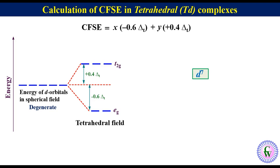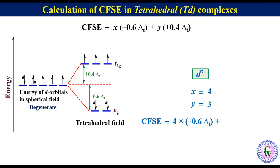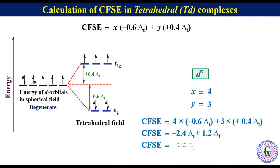If there are 7 D-electrons in the metal ion, in a spherical field environment all 7 electrons will be here. In tetrahedral ligand environment, two electrons enter the eg orbitals and 3 in t2g. The remaining two electrons will again enter eg. So in D7 tetrahedral complex, x is equal to 4 and y is equal to 3. CFSE will become 4 into minus 0.6 delta-t plus 3 into plus 0.4 delta-t, giving minus 2.4 delta-t plus 1.2 delta-t. Thus CFSE will be equal to minus 1.2 delta-t.